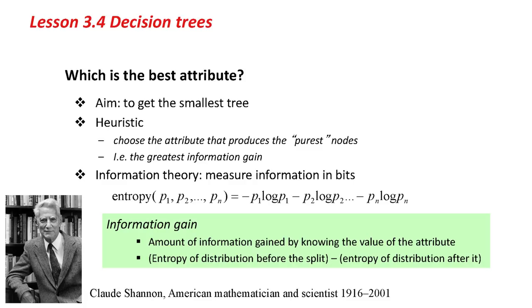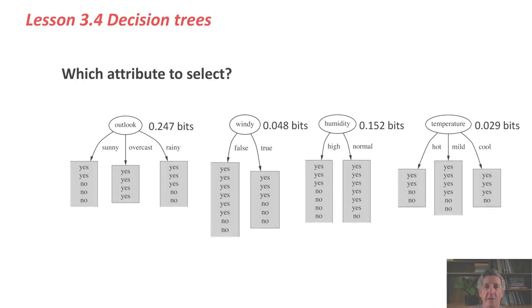What we do is we look at the information gain. How much information in bits do you gain by knowing the value of an attribute? That is, the entropy of the distribution before the split minus the entropy of the distribution after the split. Here's how it works out for the weather data.